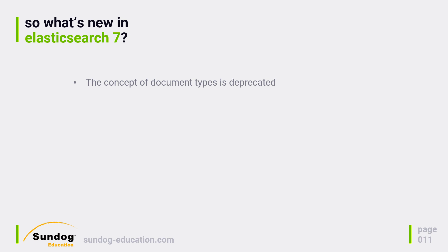For a while now, Elasticsearch has been in a long process of deprecating the concept of types. It used to be that in addition to documents and indices, there was also a type that allowed you to associate different schemas with documents within the same index. Conceptually, they found this to be a bad idea as it made people think types work the same as a database table, when in reality they behave differently.